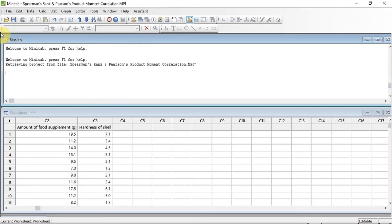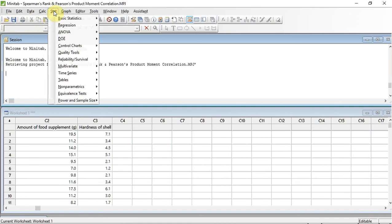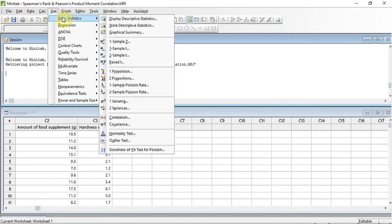I have already entered data into Minitab from Table 9.8, so let's do the tests. First, we track up to the Stats menu option and click to reveal a drop-down menu. Hover over the Basic Statistics option and then click on the Correlation option that should appear in the drop-down menu sublist.